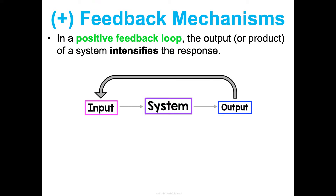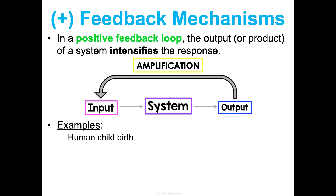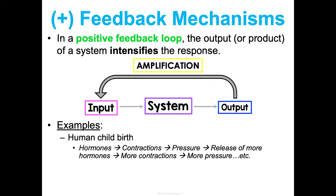In a positive feedback loop, the output of the system intensifies the response — we cause an amplification. An example is human childbirth. When the birthing process starts and it's time for the baby to be born, hormones get released that cause the uterus to contract, and those contractions create pressure. That pressure causes the release of even more hormones, which causes more contractions, which causes more pressure, which causes the release of more hormones. It's this amplification, this positive feedback loop, that keeps going until the ultimate result: the baby is born.